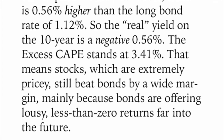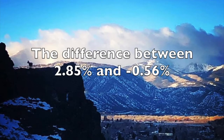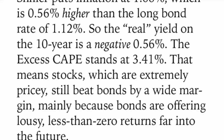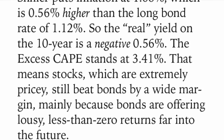As of January 21st, the regular CAPE yield was a paltry 2.85%, which is basically just the inverse of the CAPE at 35.13 — so 1 over 35.13 gives you 2.85%. Shiller puts inflation at 1.68%, which is 0.56% higher than the long bond rate of 1.12%. So the real yield on the 10-year is negative 0.56%. The Excess CAPE stands at 3.41% — the difference between the regular CAPE yield of positive 2.85% minus the negative 0.56% on the long bond.